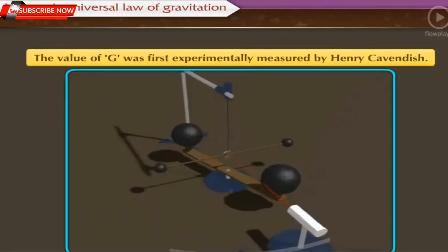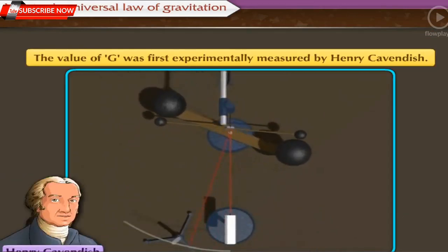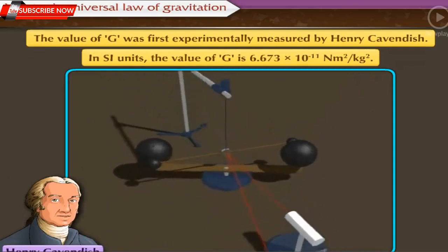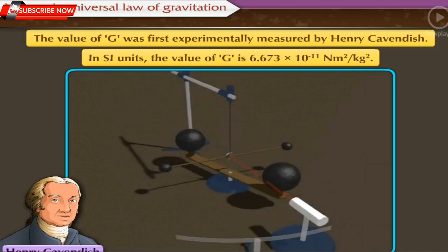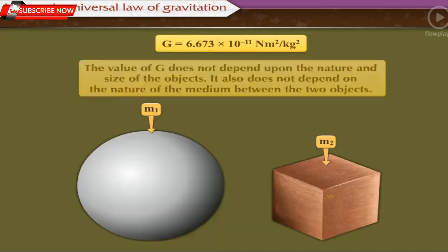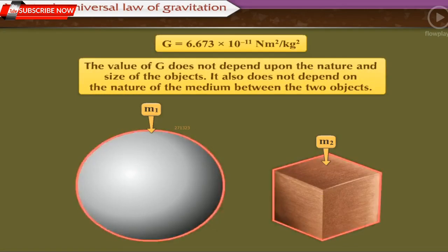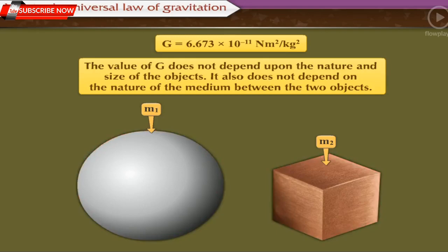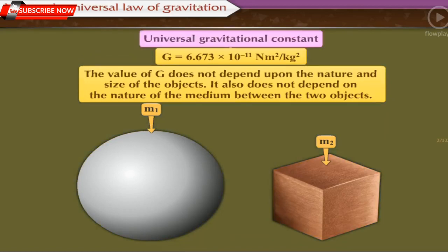The value of G was first experimentally measured by Henry Cavendish. In SI units, the value of G is 6.673 into 10 raised to minus 11 Newton meter square per kilogram square. The value of G does not depend upon the nature and size of the objects. It also does not depend on the nature of the medium between the two objects. Therefore, it is called the Universal Constant of Gravitation.